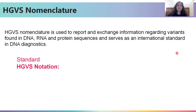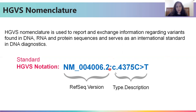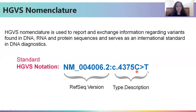The standard HGVS notation can be divided into two halves by means of a colon. The first half typically contains a reference sequence followed by its version, while the second half typically contains the type of the variant as well as the description of the variant. For instance, an NM ID means it is an mRNA variant, followed by the version which is 2. The type here is the coding type, and the description involves the position of the variant — the 4375th nucleotide — as well as the description of what the nucleotide change is, in this case a C to T substitution.